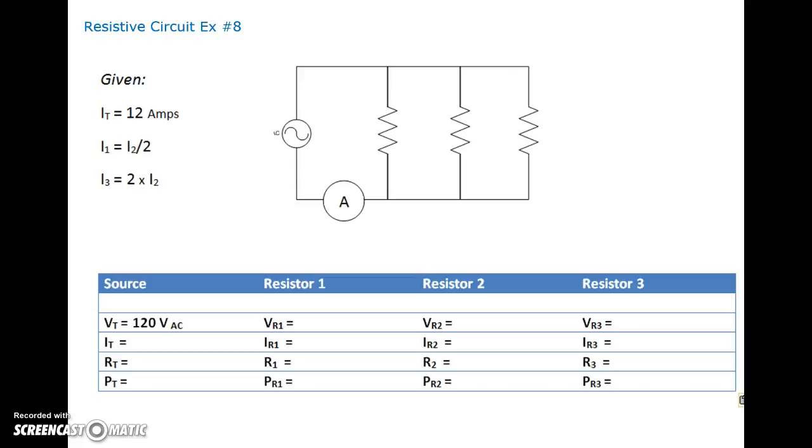So this one here, we've got resistive circuit number 8. And what have I given you? I've given you total voltage here of 120 volts. I've given you, this is another transposition question. So total current is 12 amps. And everything is given to you in terms of I2. So there's I2. The third current here, I3, is 2 times that second current. And the first current is the second current divided by 2. So it's half of the second current.